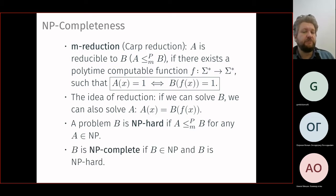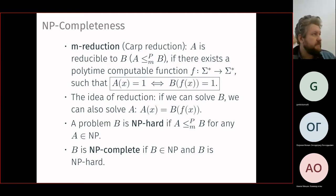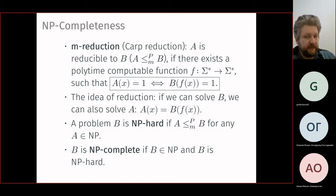You can reduce problem A to problem B if you can take the input for A, pre-process it, and submit it as input to B, then run B once and check it. The idea is that if you can solve B, you can also solve A by computing this reduction function f and querying B. There are NP-hard problems — the hardest in NP, meaning any problem in NP is reducible to them. NP-complete problems are those which are NP-hard but also themselves in NP.